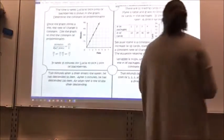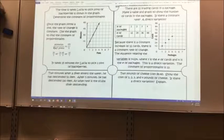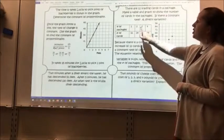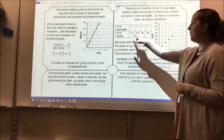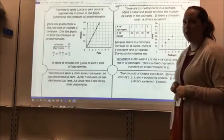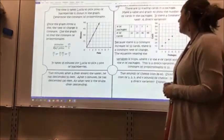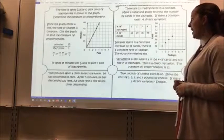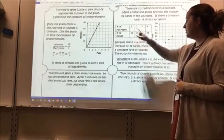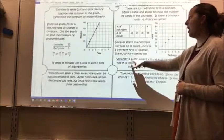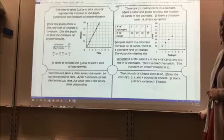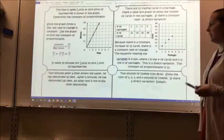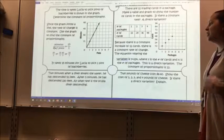In my second example, there are 12 trading cards in a package. Make a table and graph to show the number of cards in the packages. Is there a constant rate and a direct variation? One package is 12 cards, two packages is 24, three is 36, and four is 48. Because there is a constant increase of 12 each time, there is a constant rate of change. The equation relating the variables is y equals 12x, where y is the number of cards and x is the number of packages. This is a direct variation. The constant of proportionality is 12. It varies directly — meaning if x changes, y also changes.